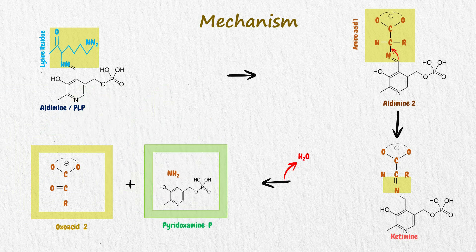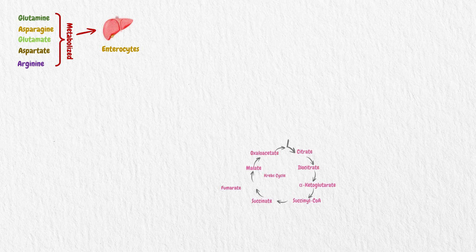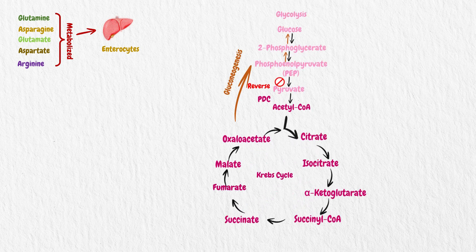Dietary protein is digested by gastric and intestinal proteolytic enzymes to form amino acids. Amino acids such as glutamine, asparagine, glutamate, aspartate, and arginine are to a large extent metabolized within the enterocytes. As we have also discussed metabolic pathways in our previous videos, such as Krebs cycle, glycolysis, gluconeogenesis, as well as urea cycle.